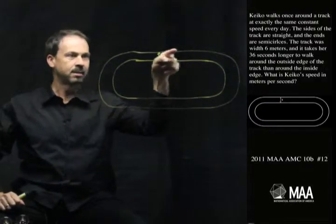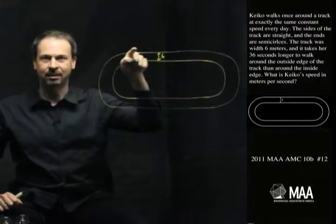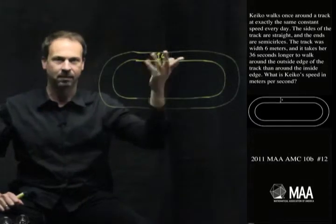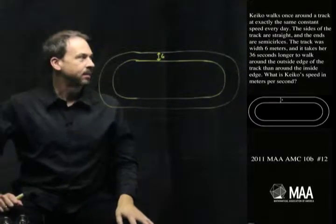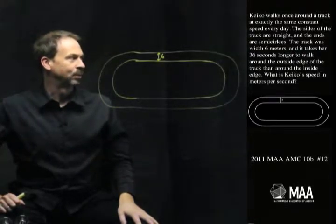Okay, so we've got an inside part, an outside part, so it takes her 36 seconds longer to go around the outside part. I guess it is actually longer. That makes sense. Question is, what is Keiko's speed in meters per second?